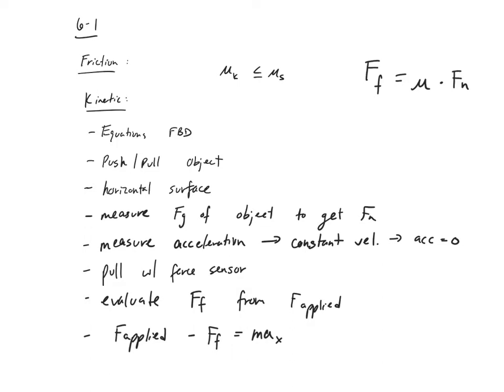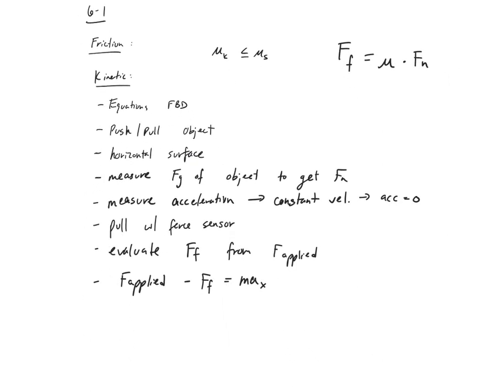We can solve the equation for F applied or for FF, recognizing that FF equals mu times F_N. So we do need the vertical direction for this problem as well. The way we have it set up is F_N pushing up and F_G pulling down, and that equals MA_Y, which goes to zero — because we're pulling horizontally on this object.